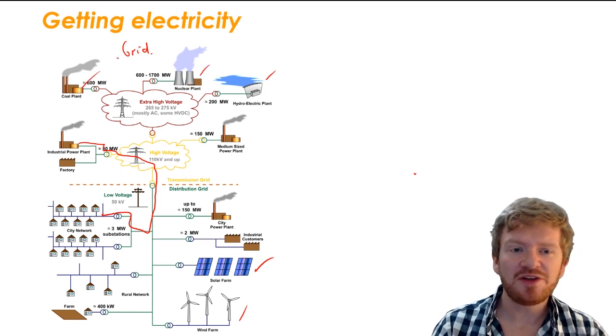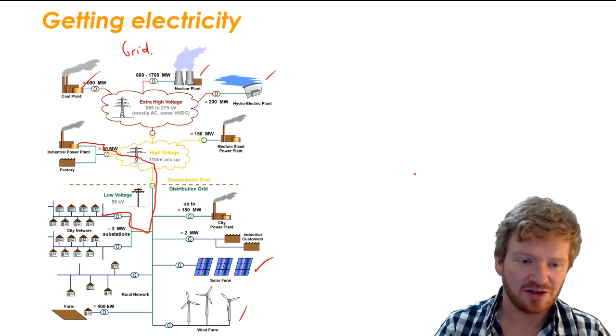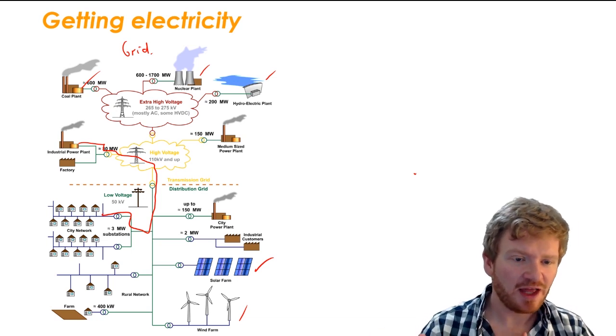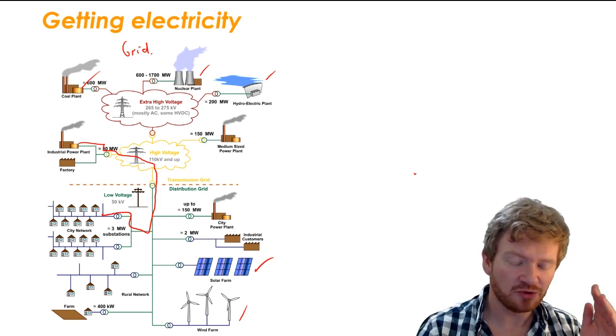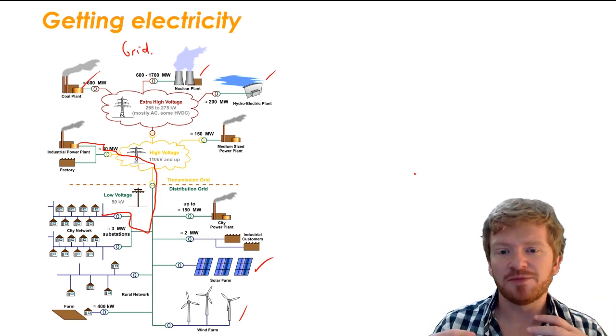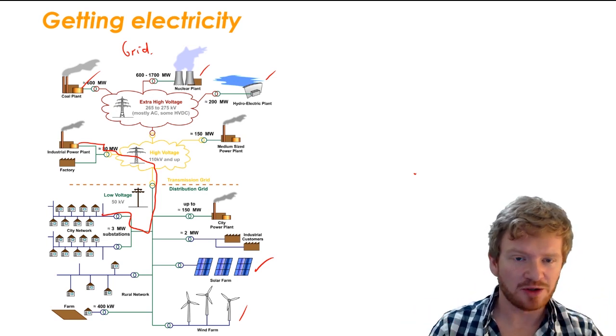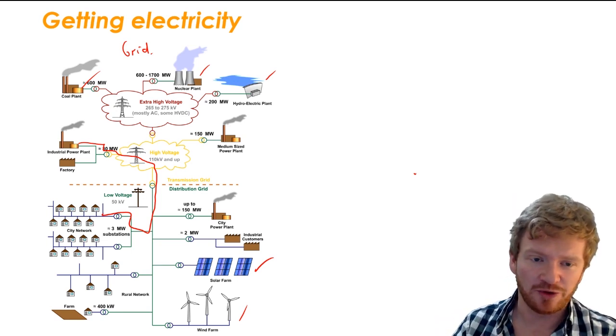All of these things need to feed into an electricity network and then go out to your homes. It's not the case that one home is fed by one power station. Actually, all the power stations in one area feed all the houses.